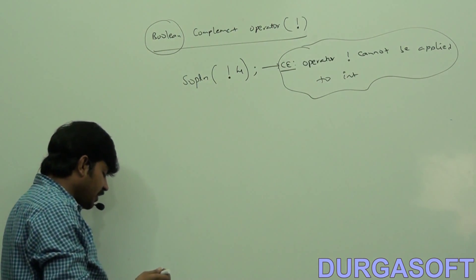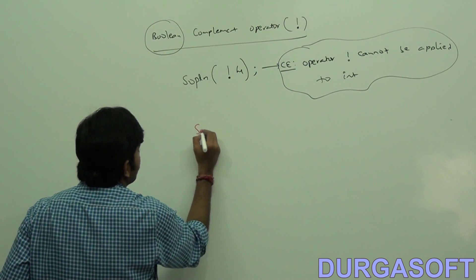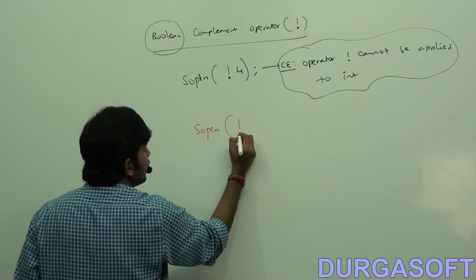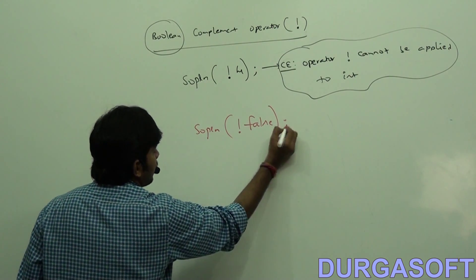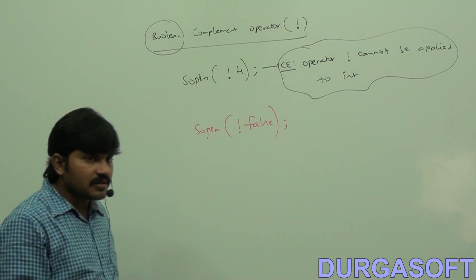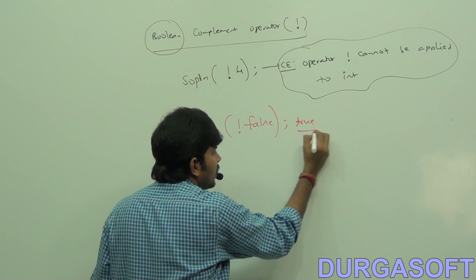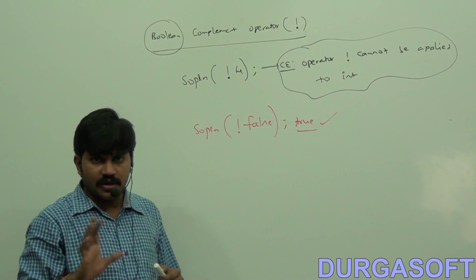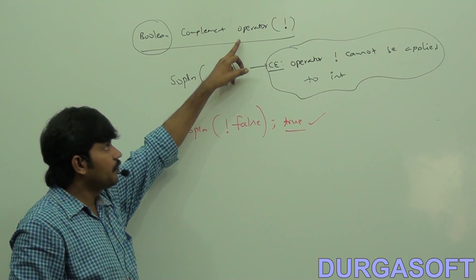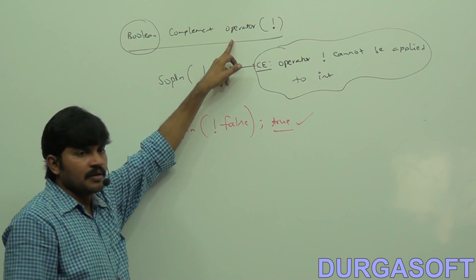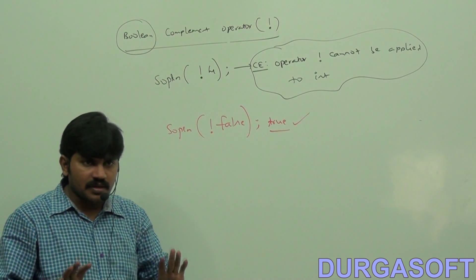But if I consider system.out.println of negation of false — negation of false — what is the answer? True itself is the answer. So, this operator is applicable only for boolean, but not for integral types.